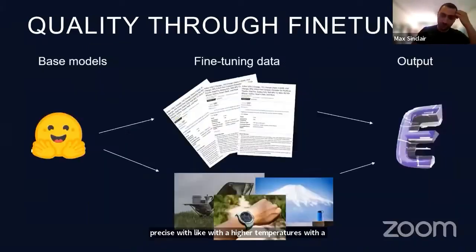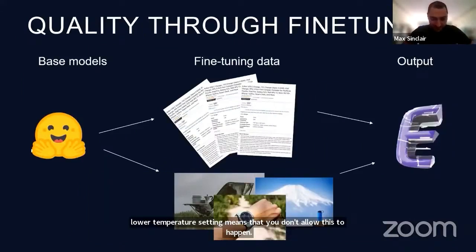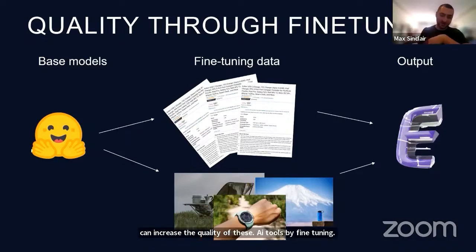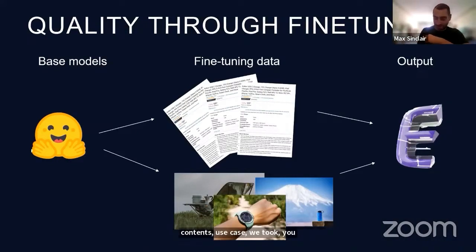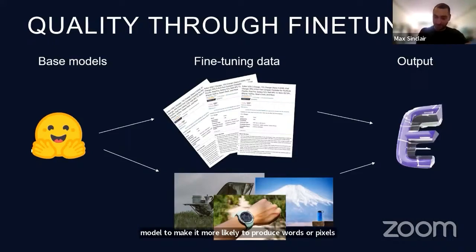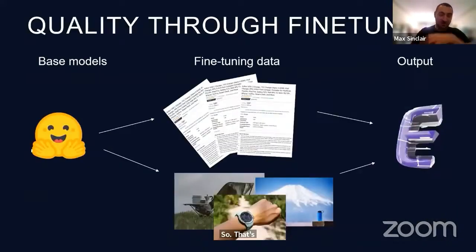You can also increase the quality of these AI tools by fine-tuning. This is when you take a base model like ChatGPT and train it on specific data. At e-content, we took highly converting lifestyle images and highly converting Amazon listings, and we fine-tuned on top of the base model to make it more likely to produce words or pixels in that format, compared to the original base which produces anything from the internet.